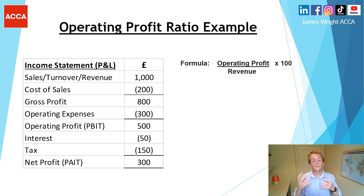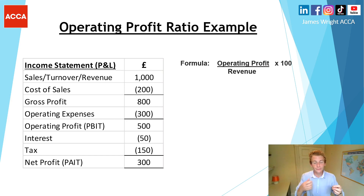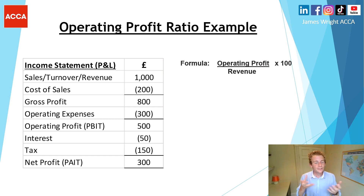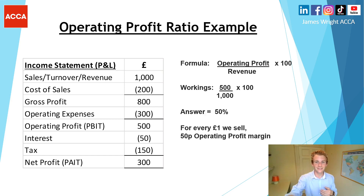The first key thing in the example is picking up where the operating profit or EBIT number is. The operating profit comes after all cost of sales deductions to give gross profit, then we deduct operating expenses. To be crystal clear: cost of sales relates to producing the product — raw materials and direct labour — whereas operating expenses are more indirect, such as admin expenses or marketing.